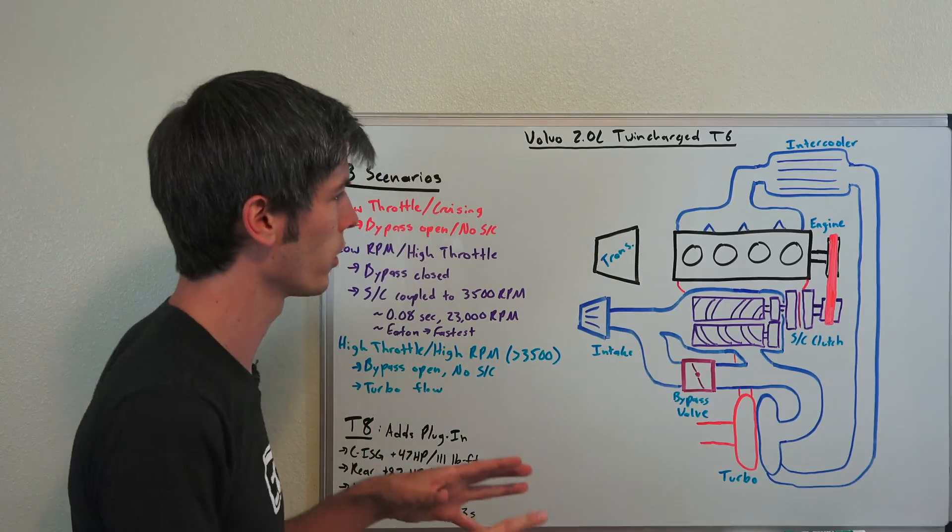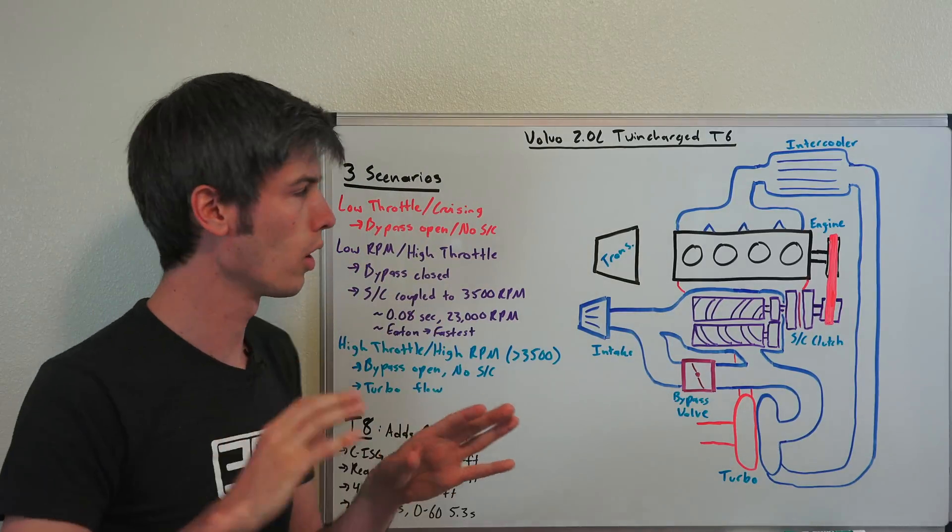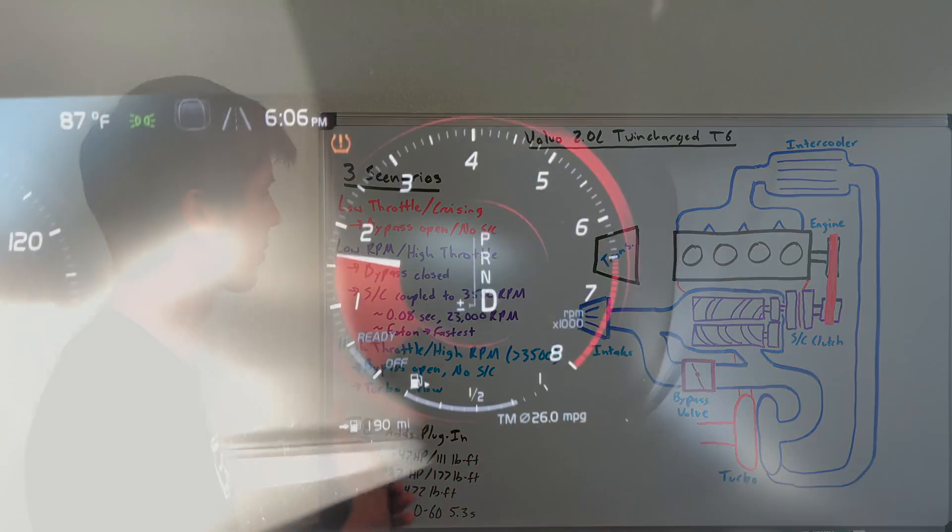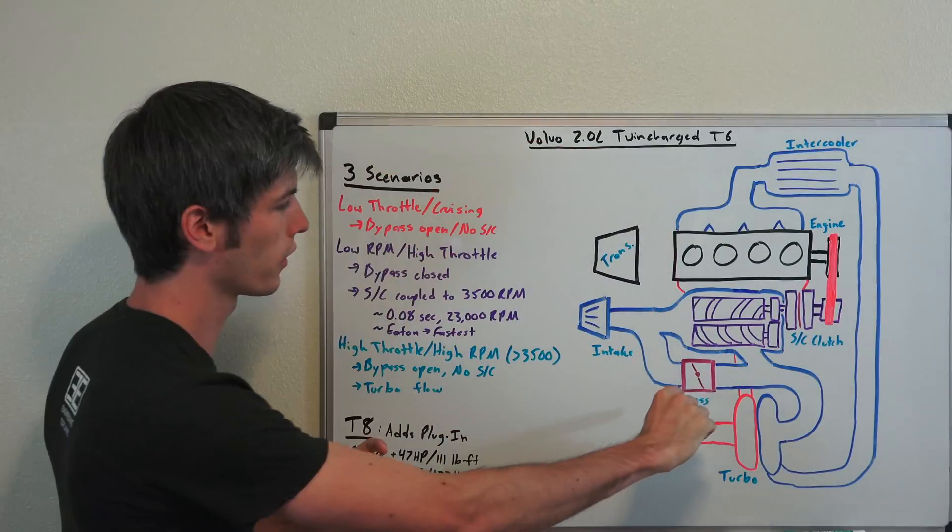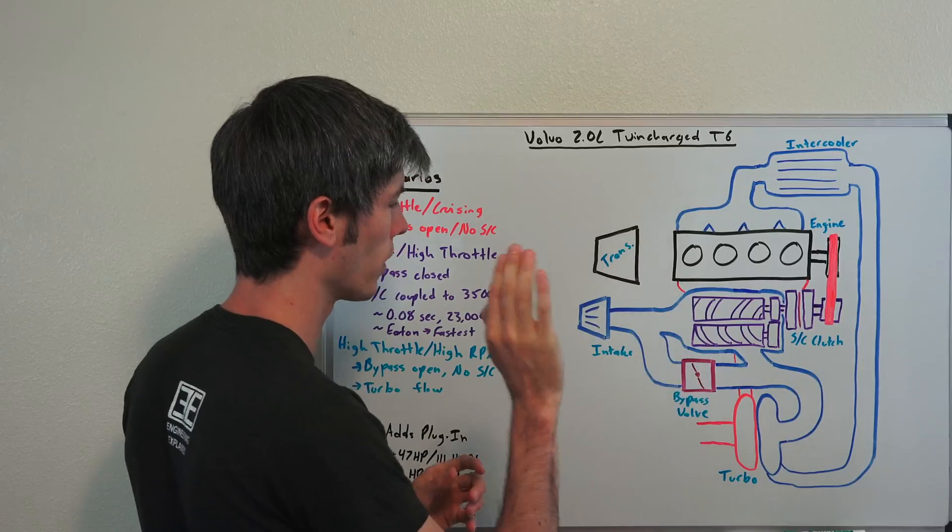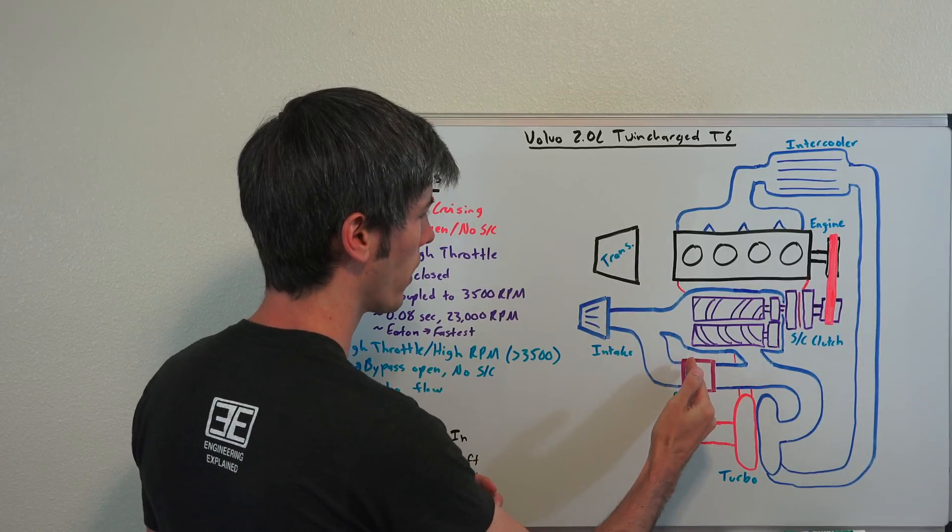But let's say now you floor it when you're in that low throttle, low RPM scenario, so you're less than 3,500 RPM, and you floor it. Well, in this scenario, this bypass valve is going to close. So once you step on the gas there, that bypass valve is going to close.